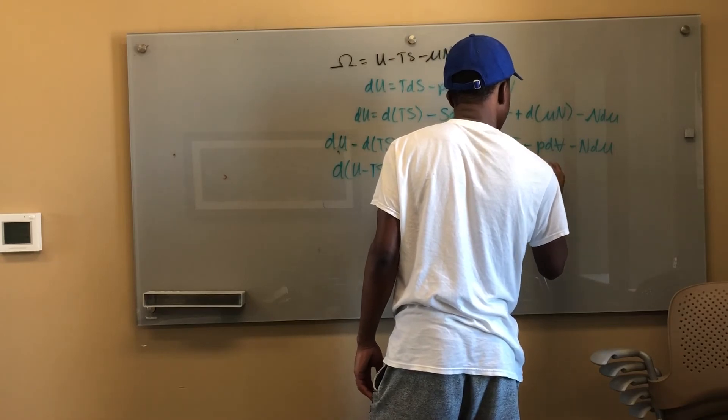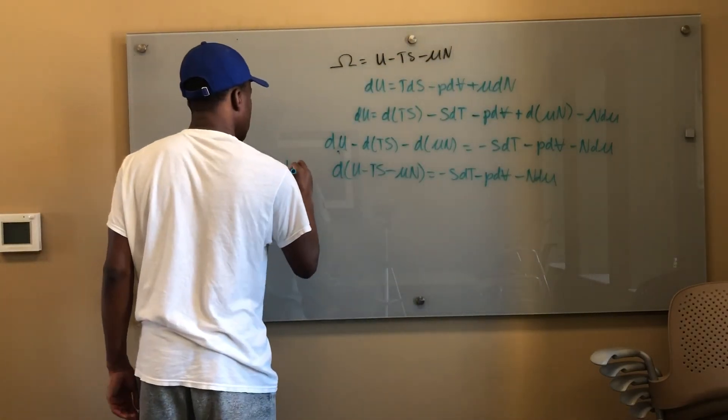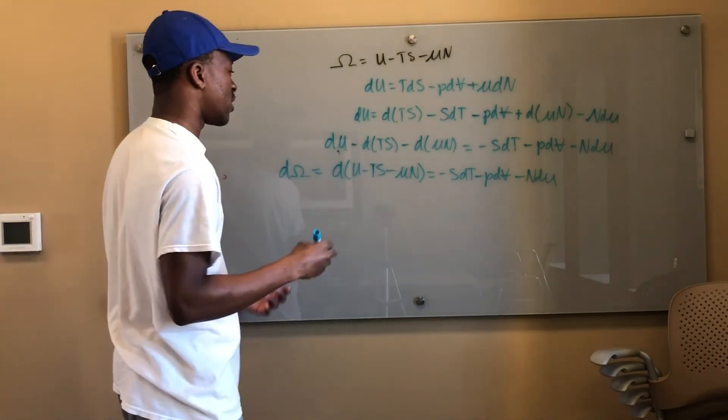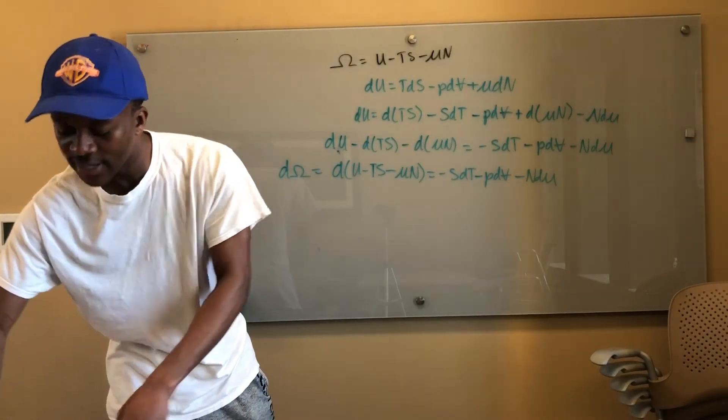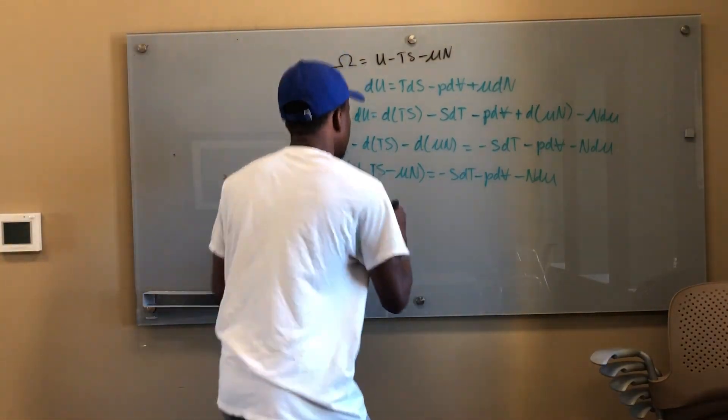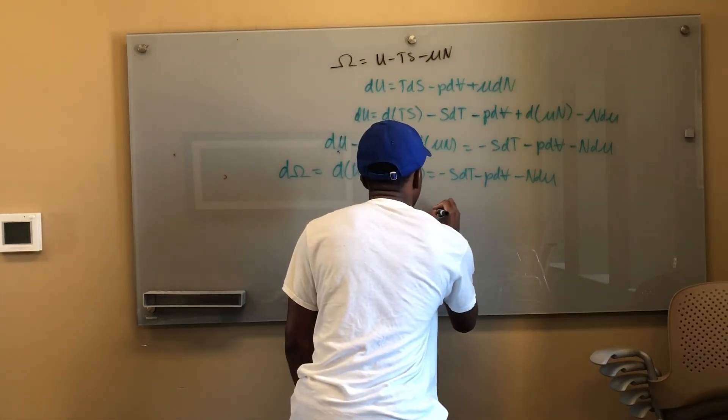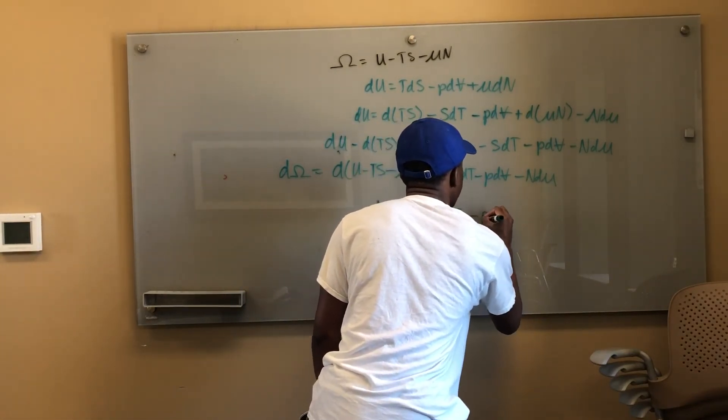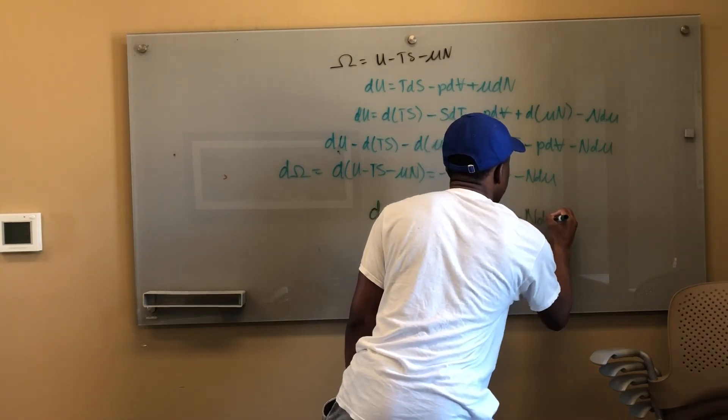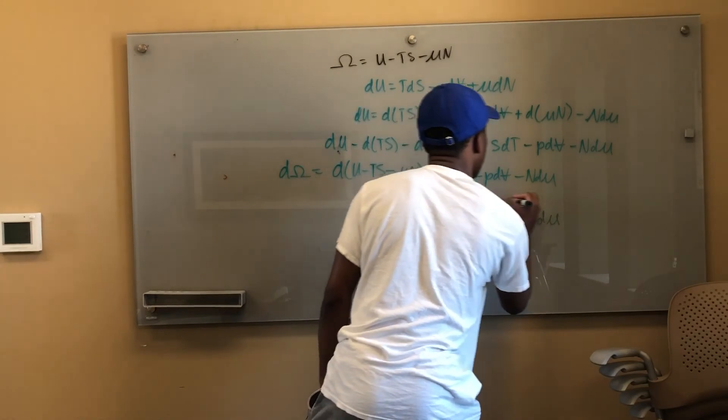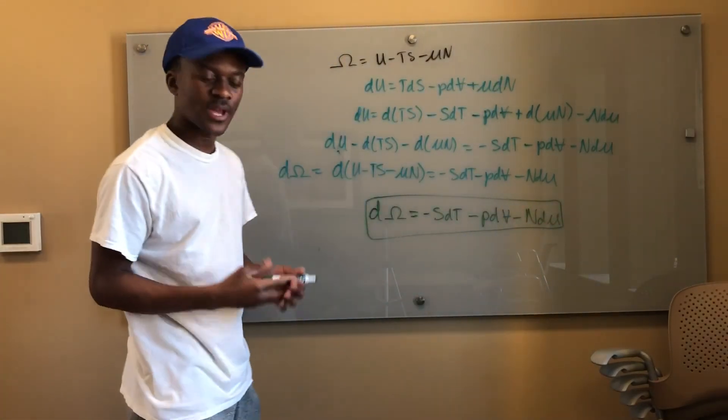This is simply equal to our grand canonical potential, alright. So d(grand canonical potential)—that being said, we can finally go ahead and say that grand canonical potential can be given by this: negative SdT minus PdV minus Ndμ. That is our grand canonical potential, the Legendre transform. Pretty simple, right?